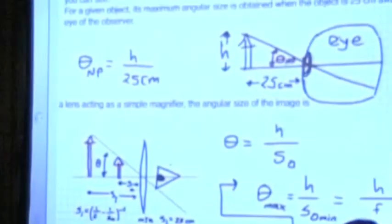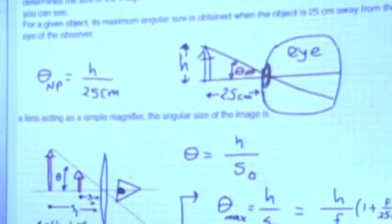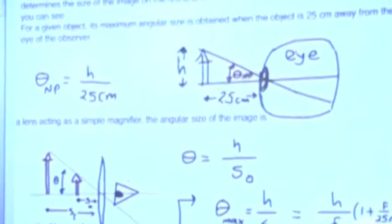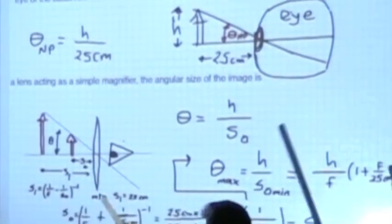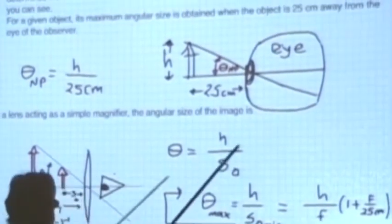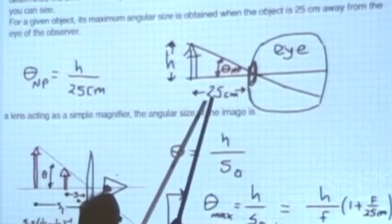Why is the angular size so important? The angular size of an object tells you how much detail of the object you can see, because it determines the size of the image of that object on your retina. If you have a tiny image on your retina, the details you can see are limited. So the bigger the size of the image on the retina, the better.